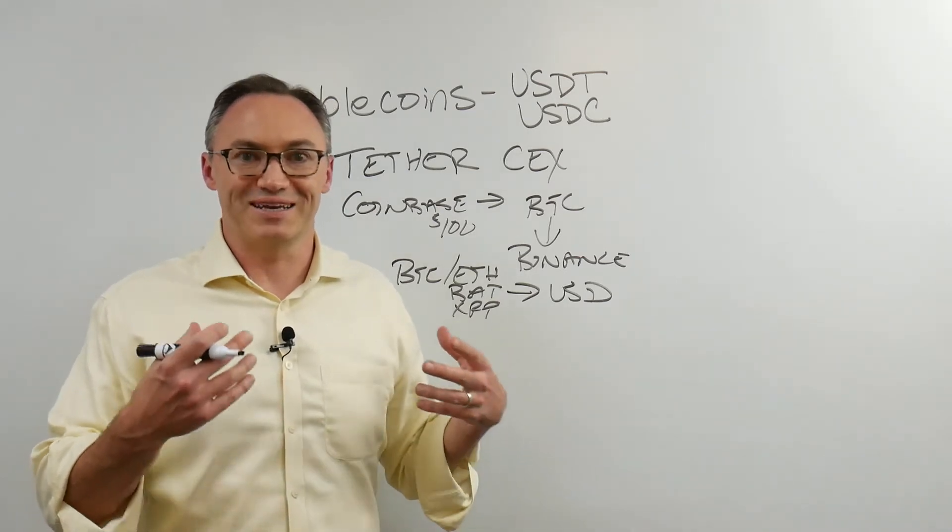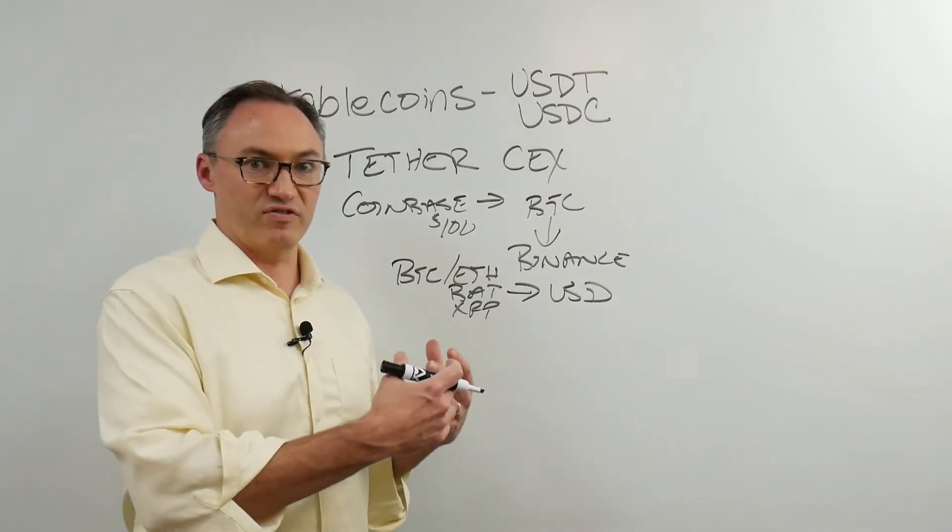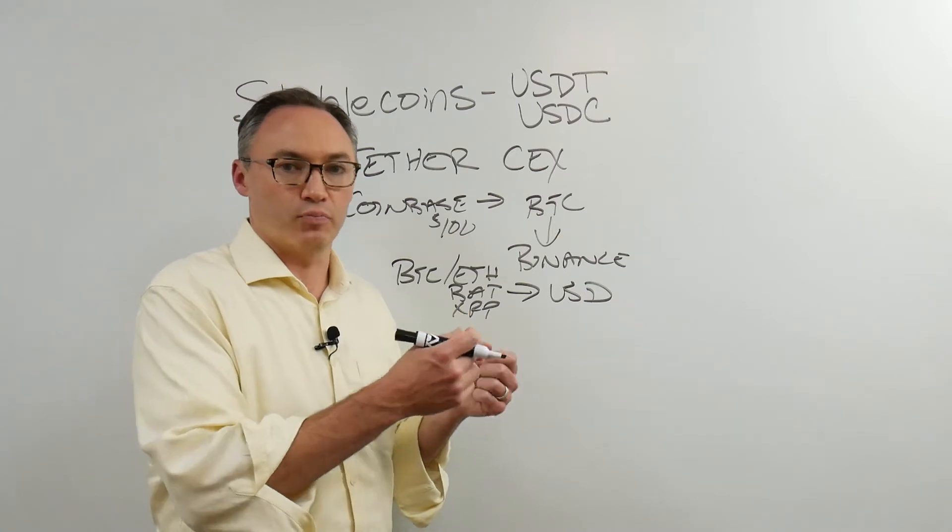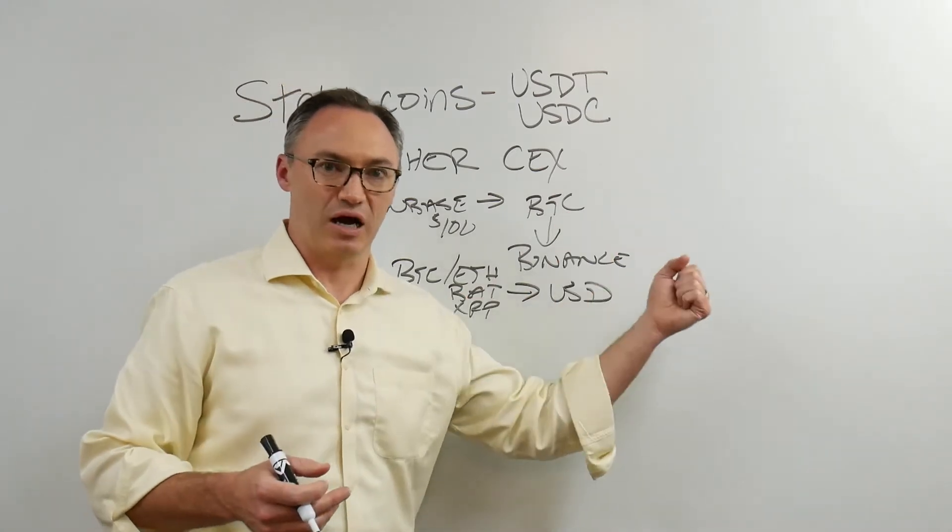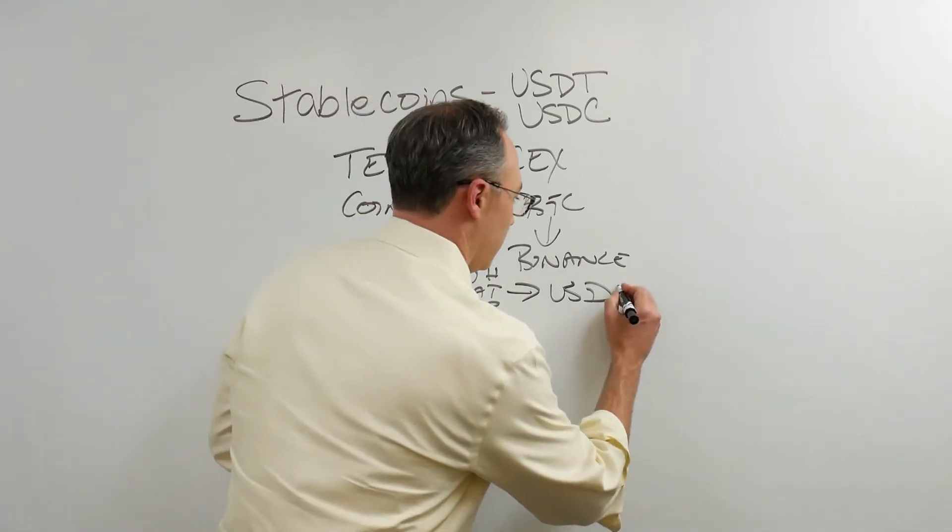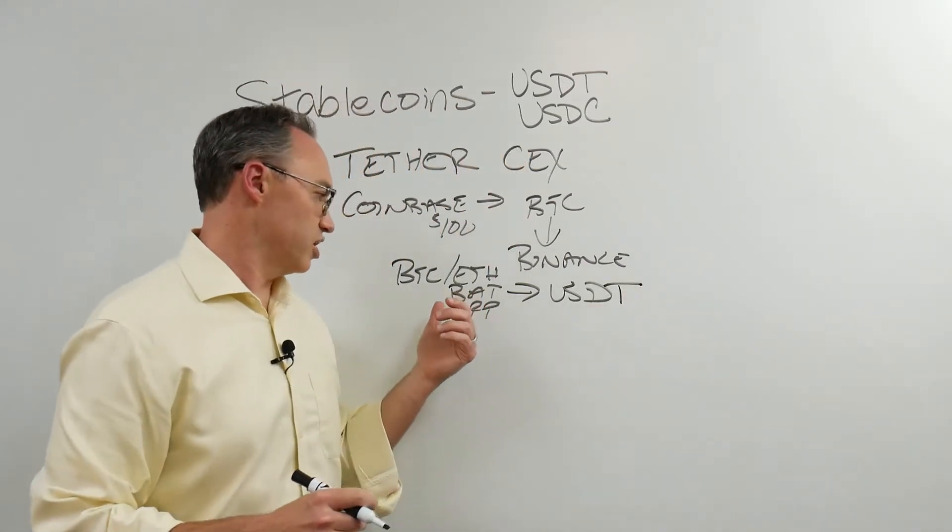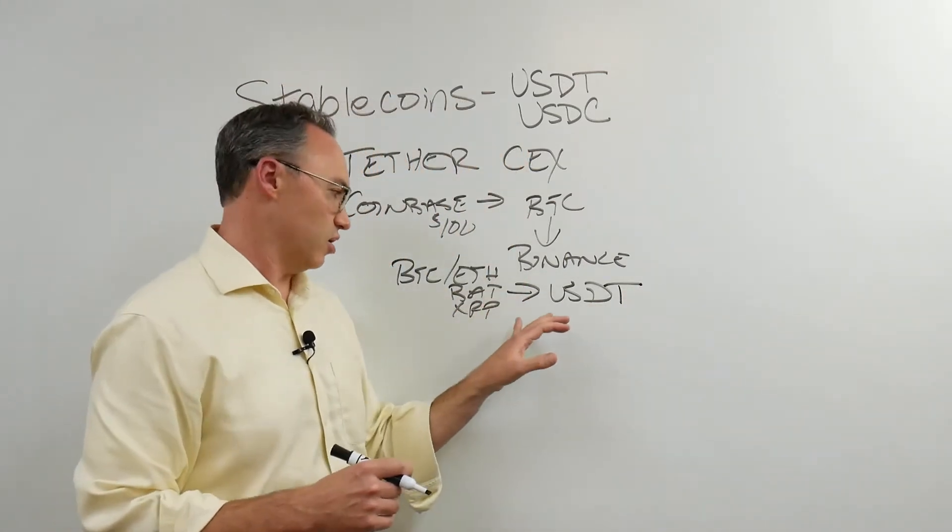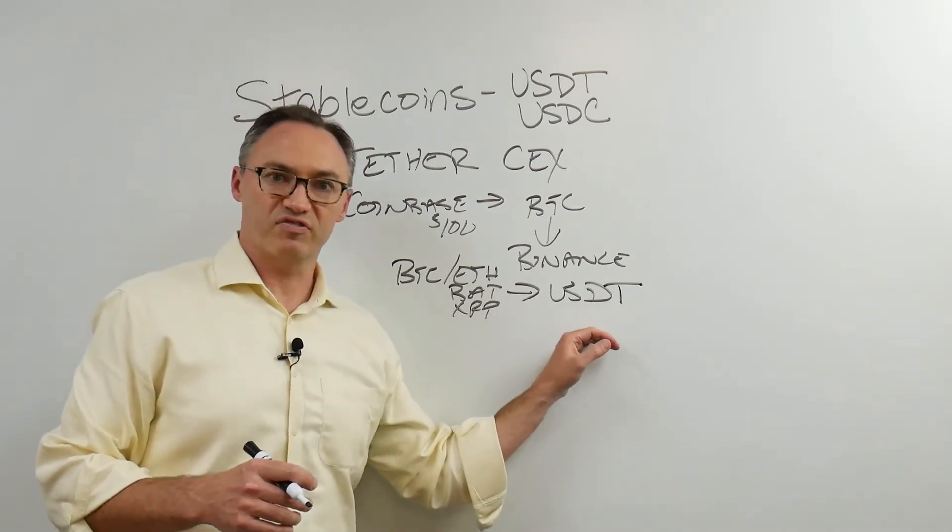Well, there was so much Tether being needed that USDT couldn't be, they couldn't bring in enough fiat currency dollars to back all the Tether, but they just kept minting Tether. So now I could trade Bitcoin, whatever it is, not all of them, but a lot of them would trade against Tether.